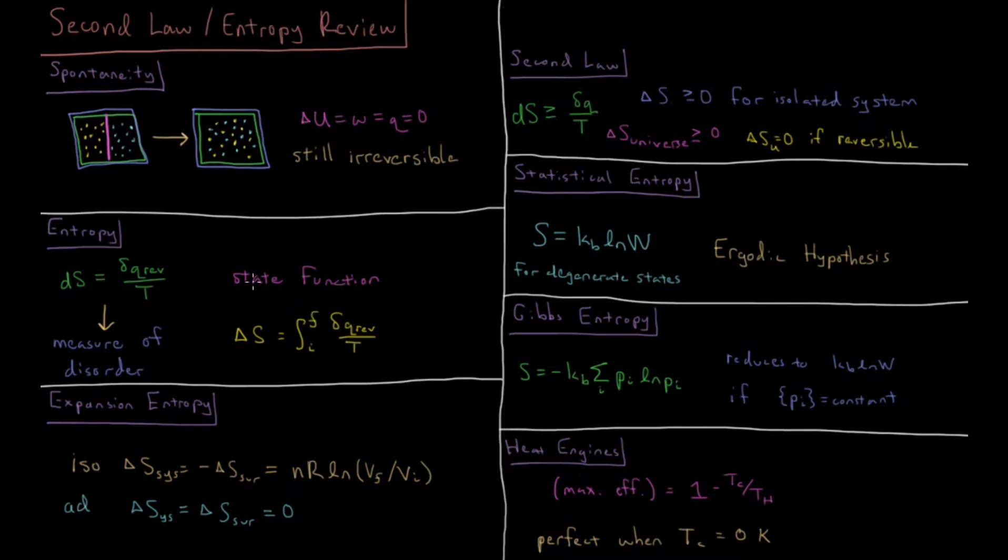So this entropy is also a state function. It does not depend on path. And the change in entropy during a system is just equal to the integral from the initial to final states of the reversible heat divided by the temperature which occurs along every step of the way.